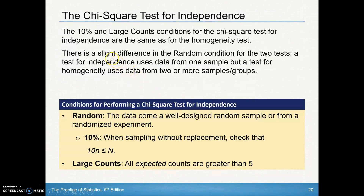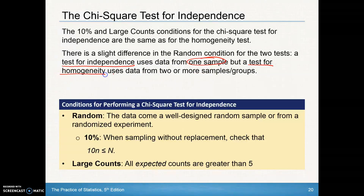We also need to look at the 10% and large counts conditions for the chi-squared test. There is a slight difference in the random condition for the two tests: a test for independence uses data from one sample, but a test for homogeneity uses data from two or more samples.